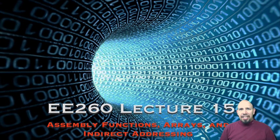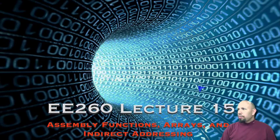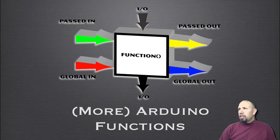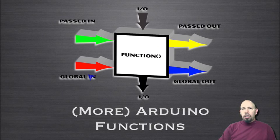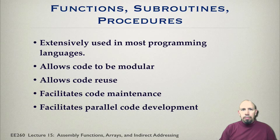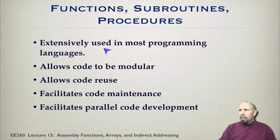This is lecture 15. In this lecture we're talking about functions some more, we're also talking about arrays and indirect addressing. We start by talking about functions. We saw last time we began talking about functions and saw that functions can be arranged in a number of ways — they can have arguments passed in, arguments passed out, global variables, and IO interactions.